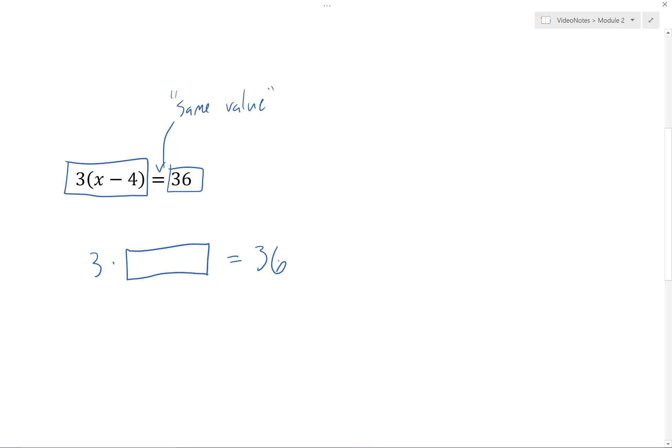3 times what number is equal to 36? We know that this number has to be 12. Therefore x minus 4 must be equal to 12.